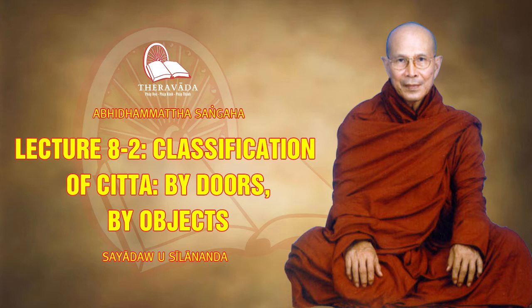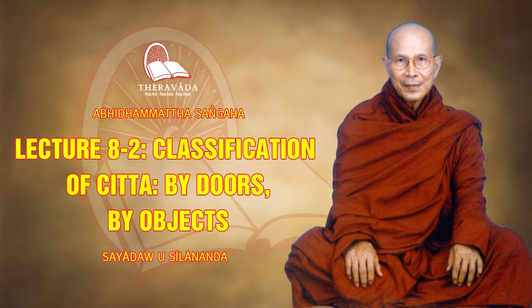Again, 46 types of consciousness that arise through Tongue-dwar take present taste as object. And 46 types of consciousness that arise through Body-dwar take touch as object. Touch means the combination of earth element, fire element, and air element — three primary elements together is called touch or tangible object.